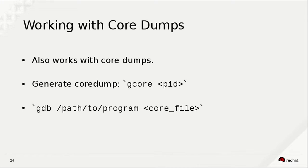This also works with core dumps. If we have a Python process that's running and stuck, and I'm getting a call during the middle of the night, I tell them: generate a core dump for me. Once we have the core dump, we can take it, send it back to our offices, and use GDB to debug exactly the way we have seen before.